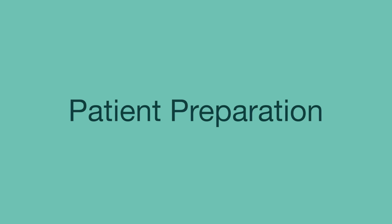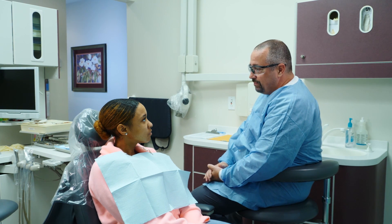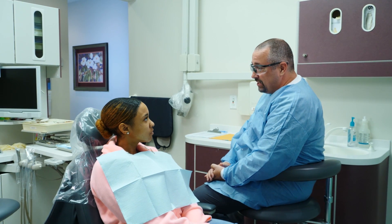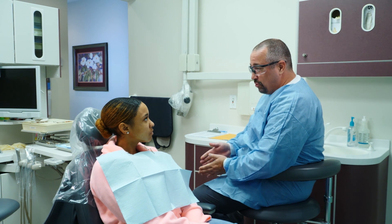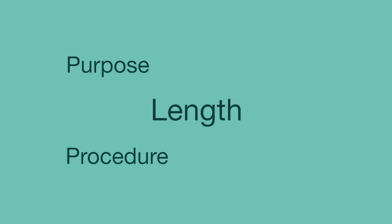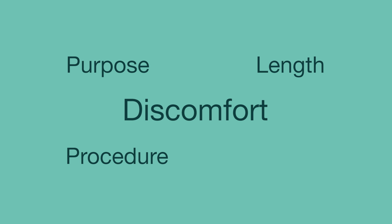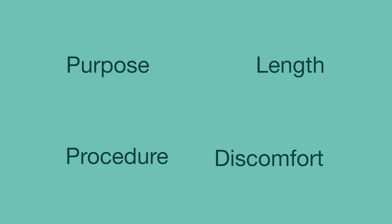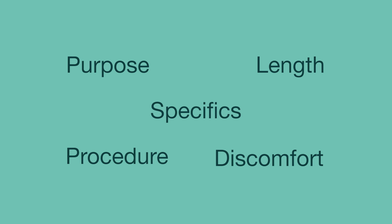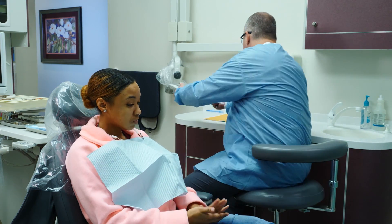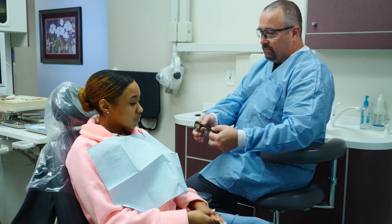It's important that the patient is prepared both mentally and physically prior to the anesthetic administration process. To prepare the patient, explain the anesthetic administration procedure in detail and address any questions or concerns, including the purpose of the procedure, what will be done, how long it will take, any possible discomfort or pain involved, any procedure-specific points of interest such as tastes and sensations the patient may experience, and how topical anesthetic is applied. Ensure the patient has signed a procedural consent form and has been provided with protective eyewear.